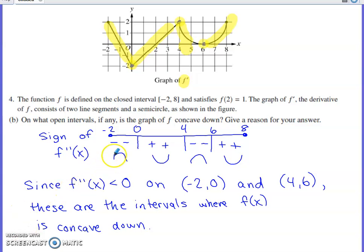Where are we concave down? Anywhere where the sign of the second derivative is negative. Your reason for your answer can't be the sign chart. The reason does have to be verbal. So since f double prime is less than 0 on the intervals negative 2 to 0 and 4 to 6, those are the intervals where f of x is concave down. Also make sure you recognize what an open interval is. An open interval does not include endpoints. So an open interval is going to be specified with parentheses rather than with brackets.